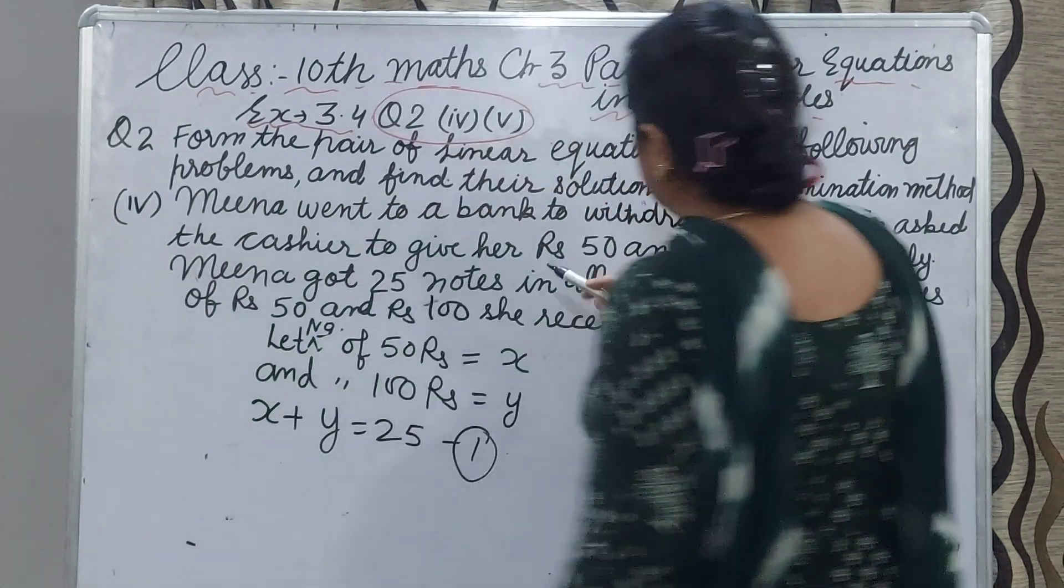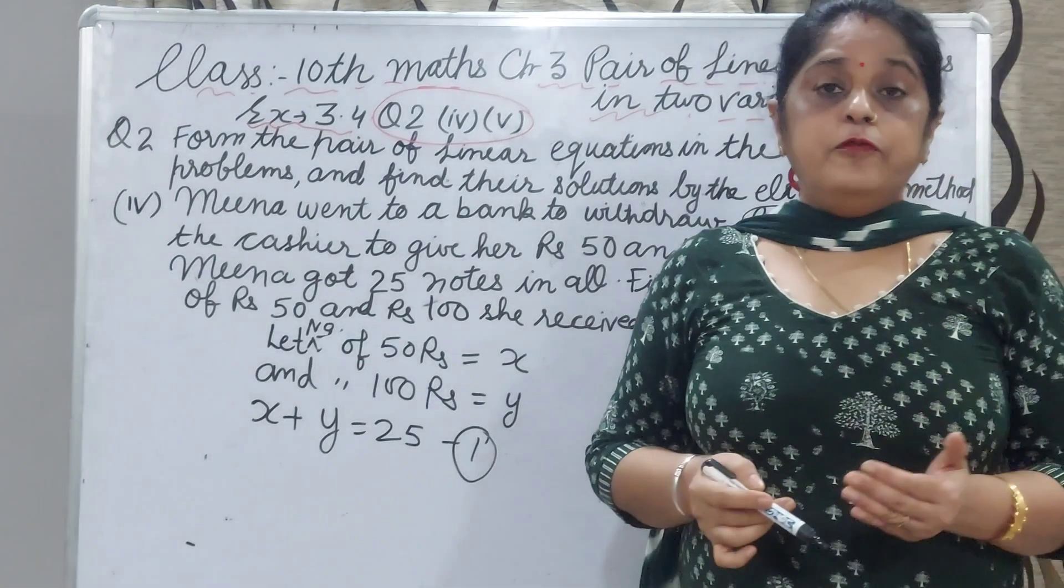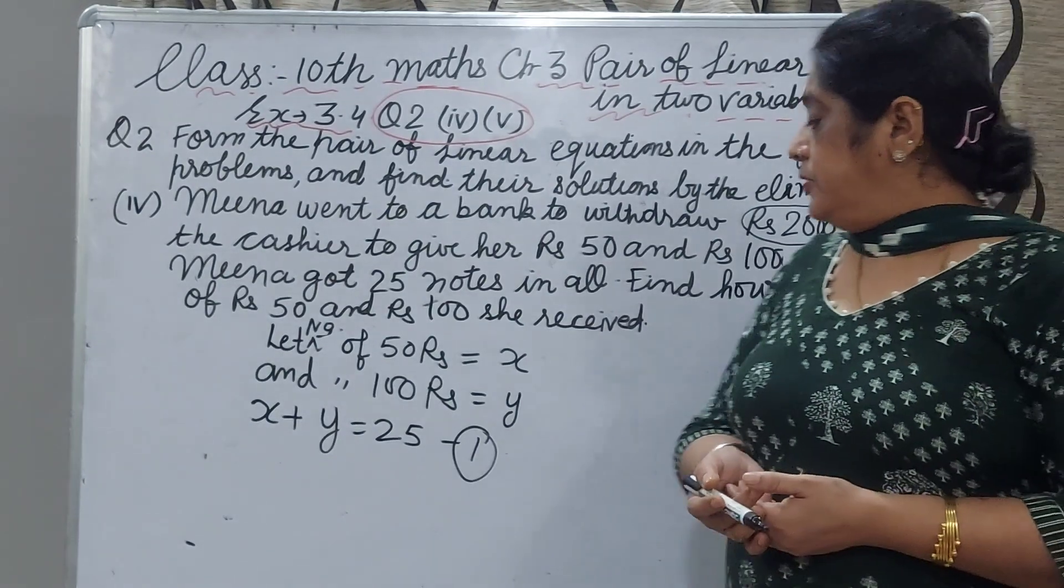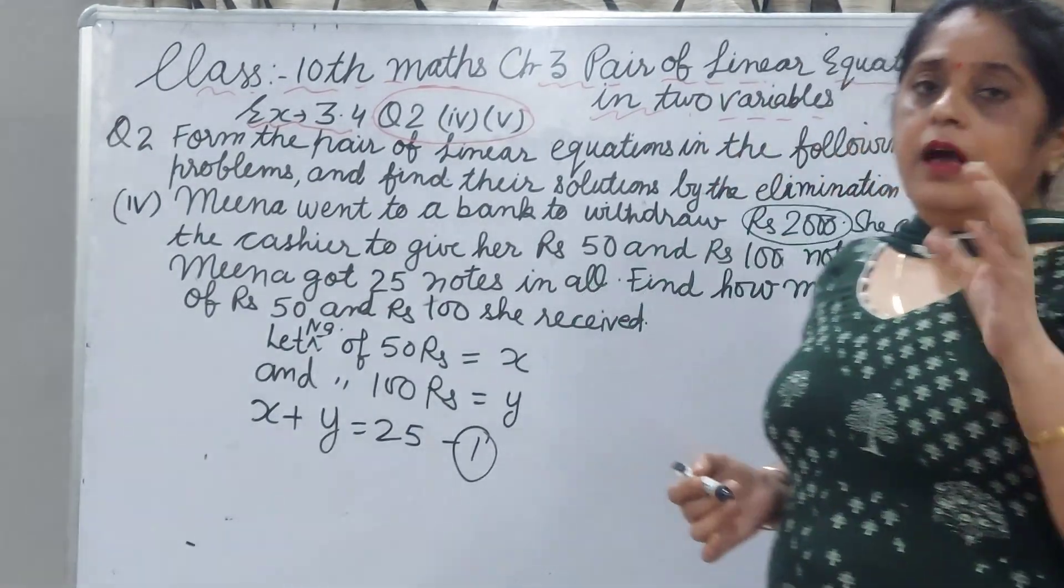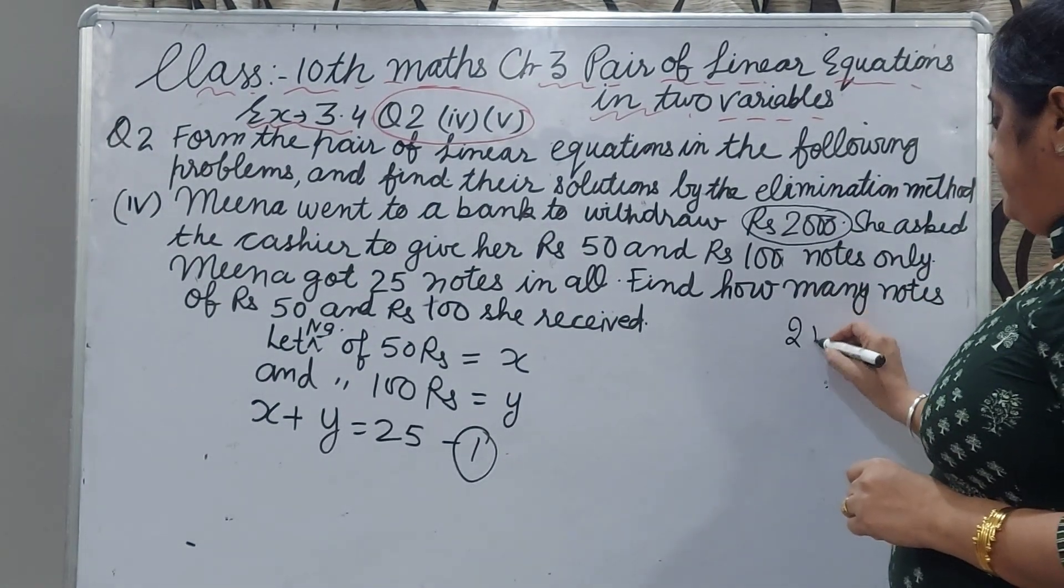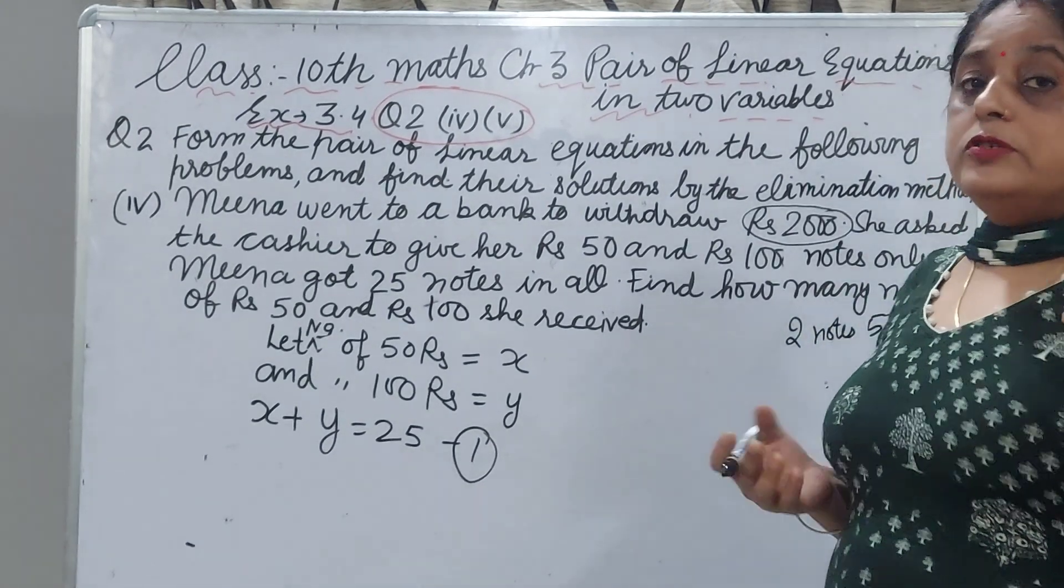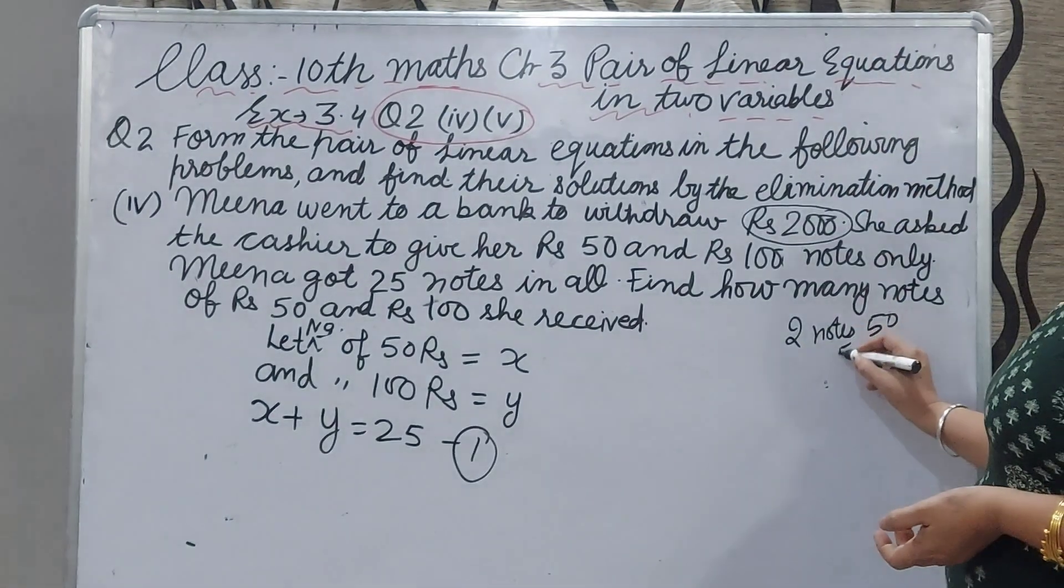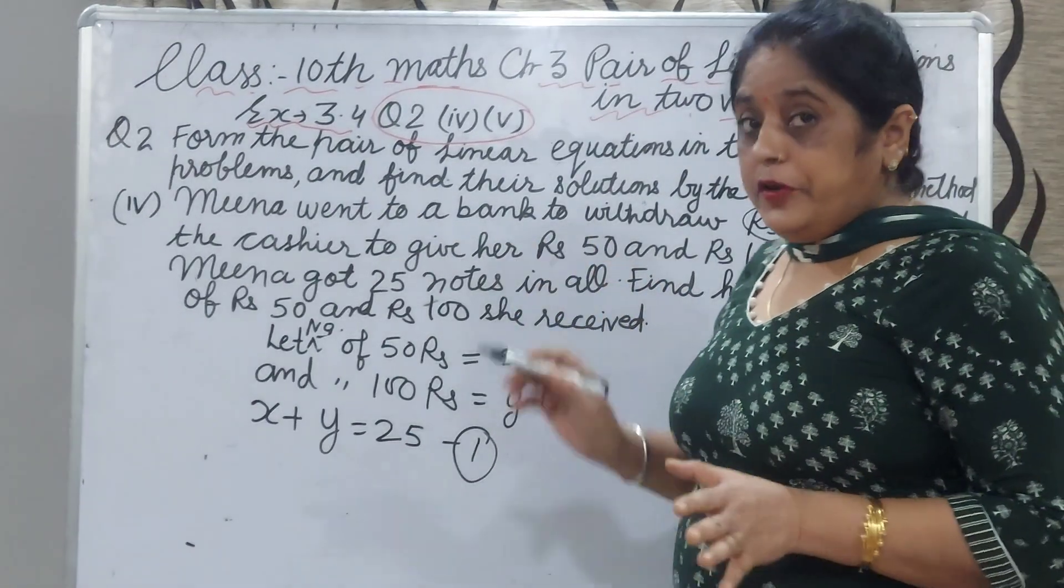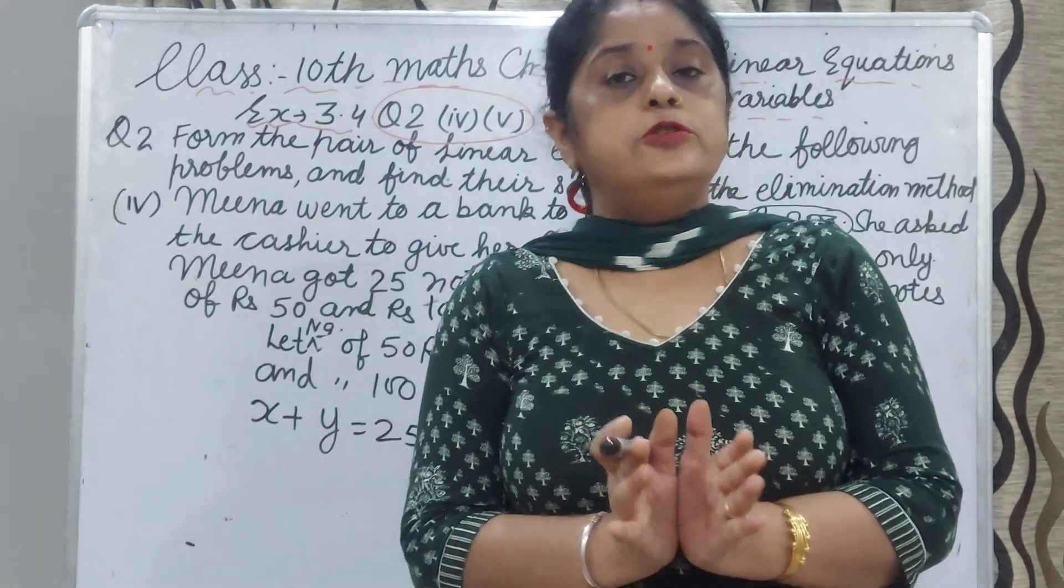Now, total money was 2000. 50 rupees, we don't know how many number of notes, we assume as x and 100 rupees note we assume as y. I want to give you an example: if you have 2 notes of 50 rupees, total money will be 100, means 50 multiply 2. Now, 50 rupees note value and 100 rupees note value, total value money is 2000.